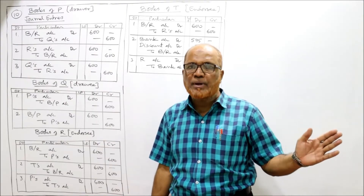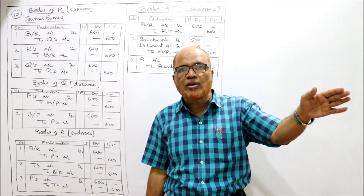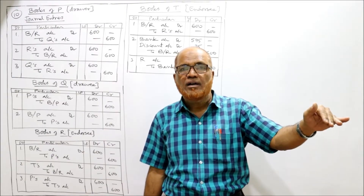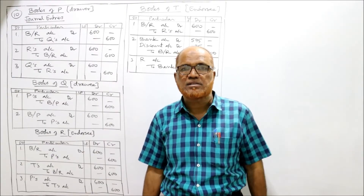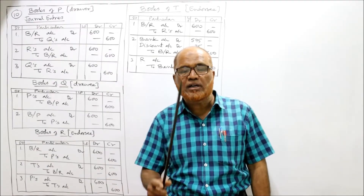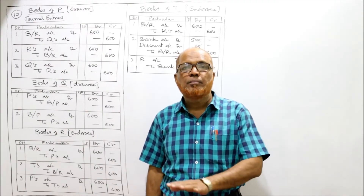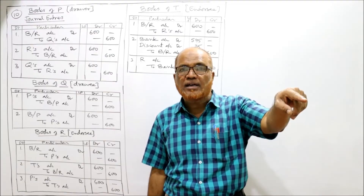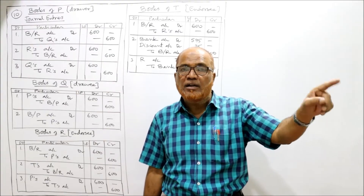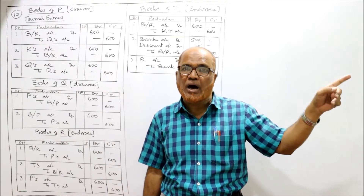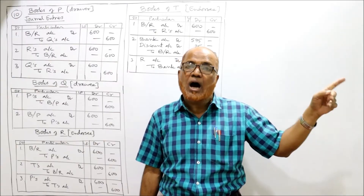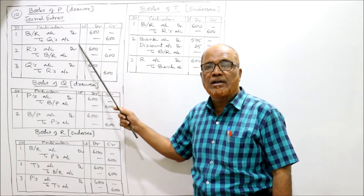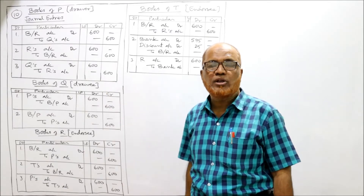R has endorsed the bill to T, T discounted the bill with the bank, so the bill is with the bank. On the due date the bank presents the bill to Q but Q dishonors it. The bank recovers from T, T from R, R from P, and P ultimately recovers from Q.